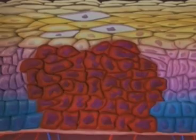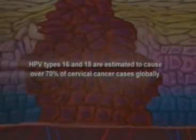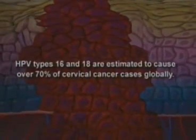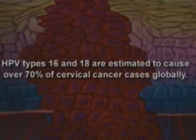As mutations accumulate, the cells undergo morphologic changes that lead to the development of precancers or cancers of the cervix, vagina, or vulva. The HPV types 16 and 18 are estimated to cause over 70% of cervical cancer cases globally.